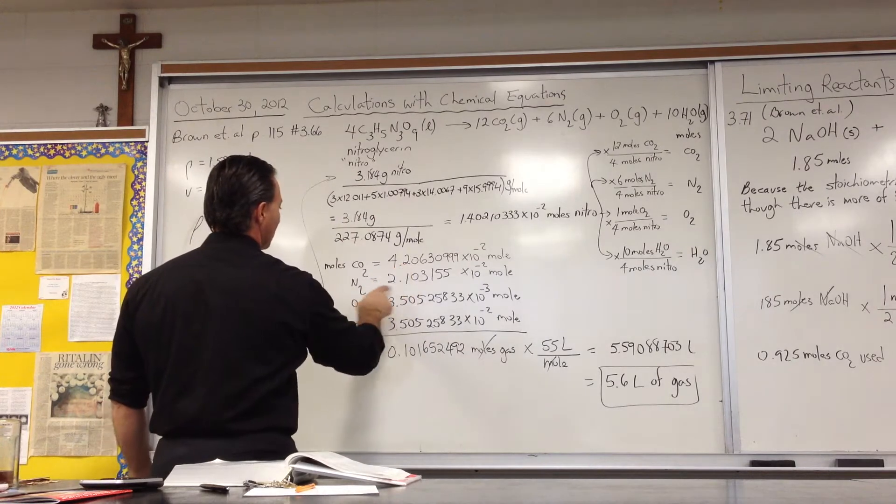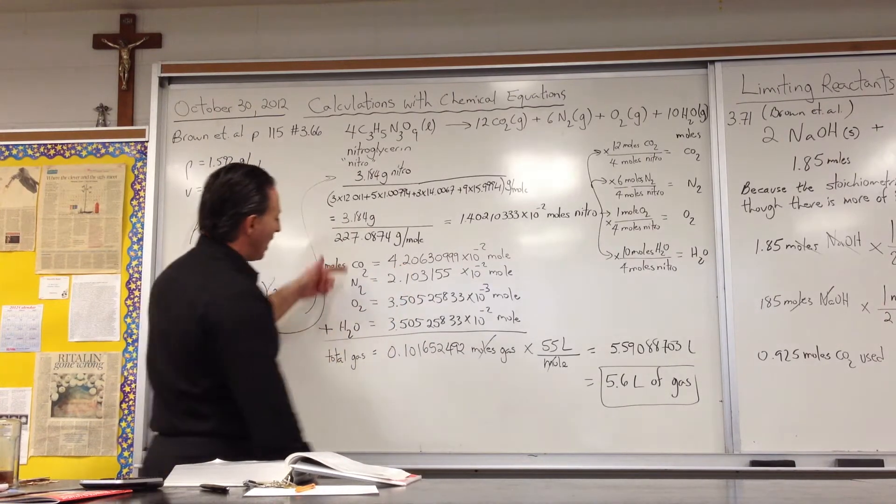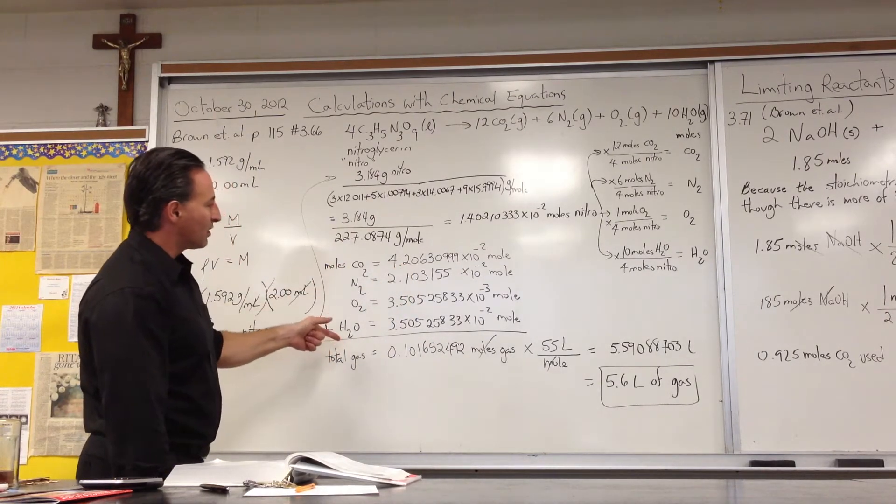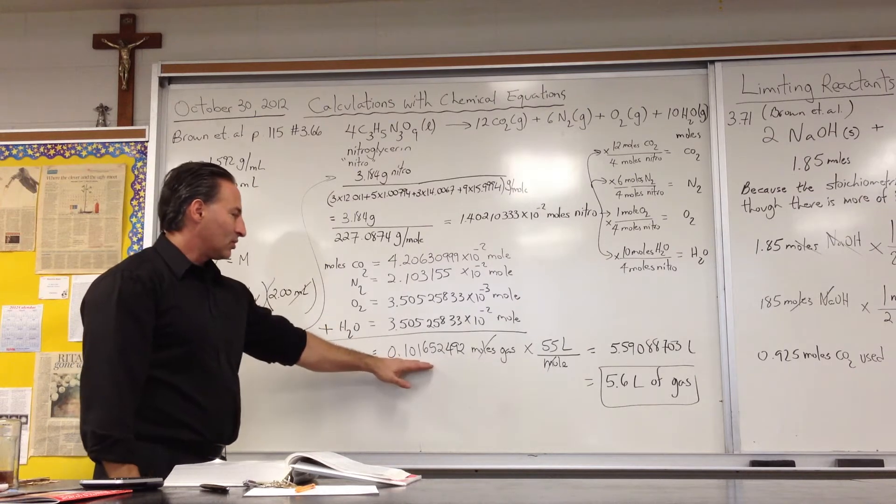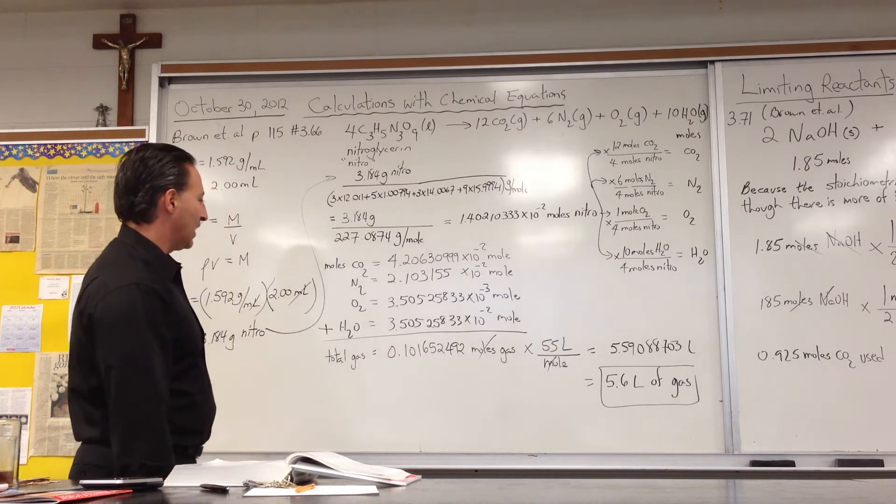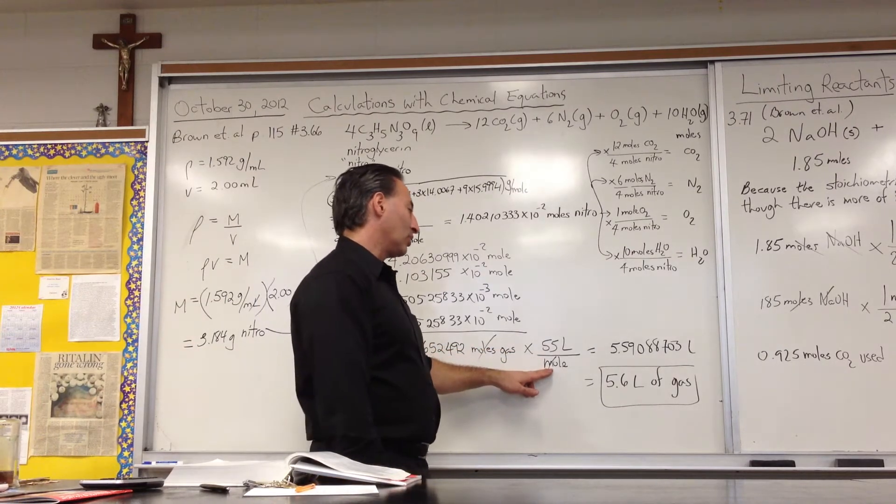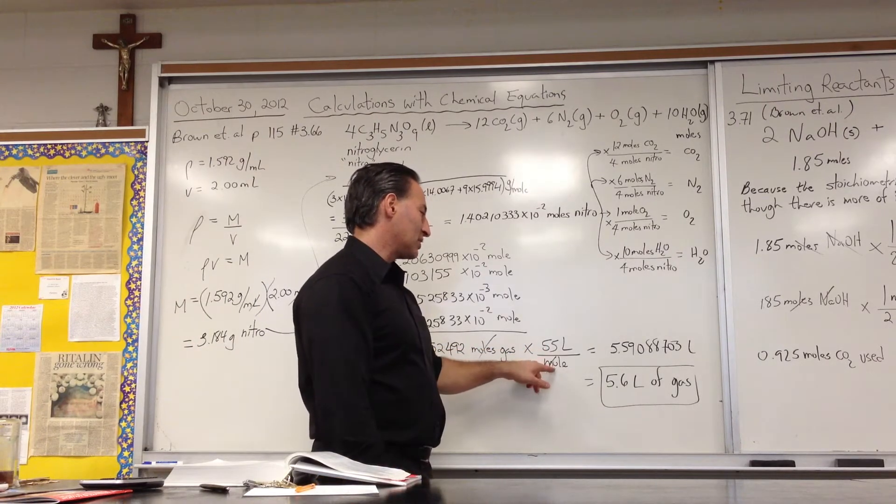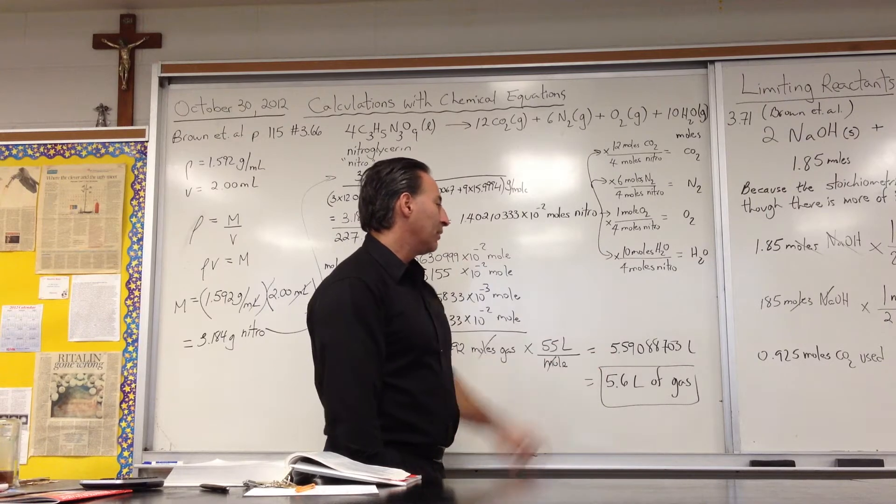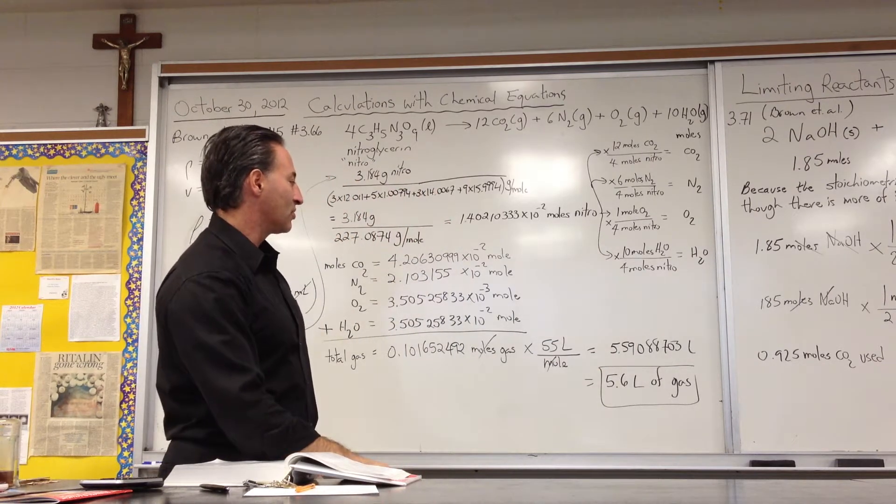That many moles of CO2, that many moles of nitrogen, and so on. I then added all the moles of each one of the gases. And I got a total value of 0.1 moles of gas. I then multiplied by 55 liters per mole of gas under the conditions of explosion, as it says in the question. And we get 5.59 liters of gas produced.